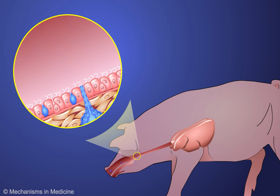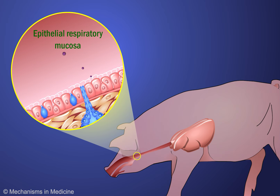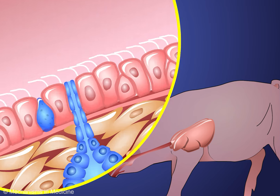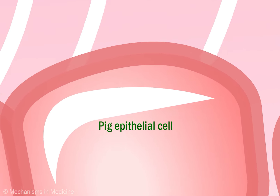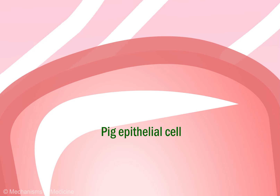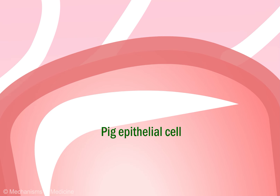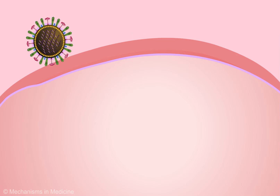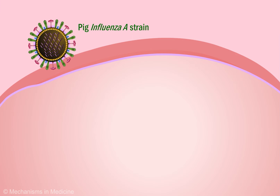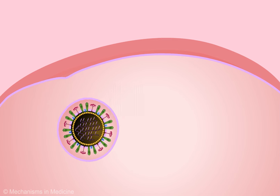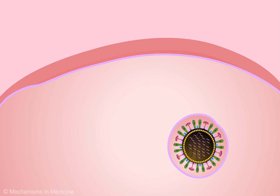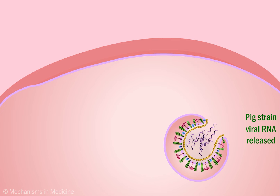Influenza sets up local upper respiratory tract infections in pigs. The virus targets and infects epithelial respiratory mucosa cells. Hybrid viruses are created when different strains of the virus infect the same cell. First, the native pig strain of influenza A targets the epithelial cell, binds and enters the host cell through endocytosis, and releases its viral genome into the cytoplasm.